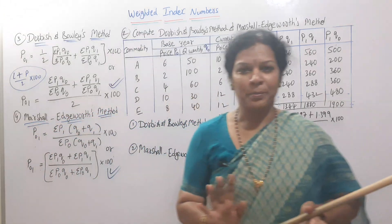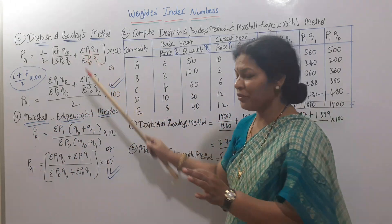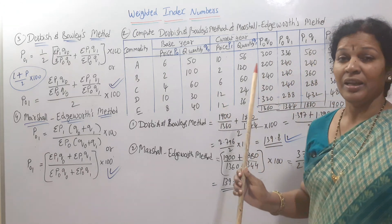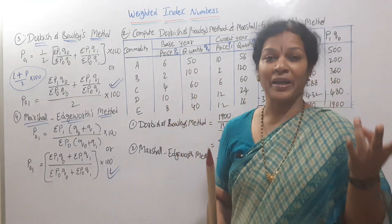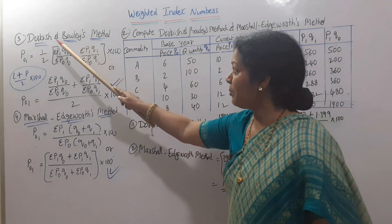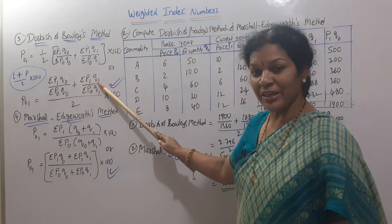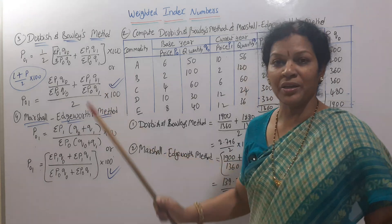Shall I give you a recap? Nothing much, just remember the formulas - same calculations based on Laspeyres and Paasche. Dorbish-Bowley method: remember Laspeyres plus Paasche divided by 2 times 100, or L plus P by 2 into 100.